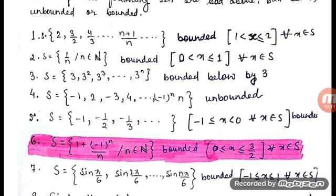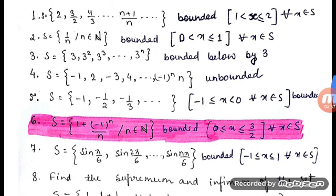The fourth set S consists of elements like -1, 2, -3, 4, with the nth term given by (-1)^n · n. If we try to find the lower bound or upper bound, we cannot, because the set goes towards negative infinity and positive infinity. Therefore it is unbounded.